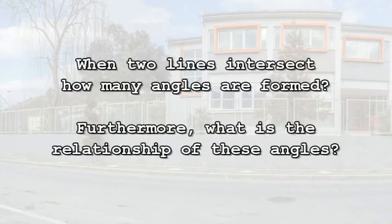When two lines intersect, how many angles are formed? Furthermore, what is the relationship of these angles?